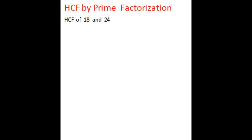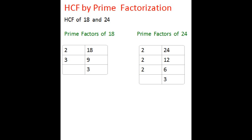Let's see how to find HCF or Highest Common Factor using the method of Prime Factorization. Let's consider these two numbers 18 and 24. What we need to do first is find prime factors of 18 and 24 and then we find the common prime factors.